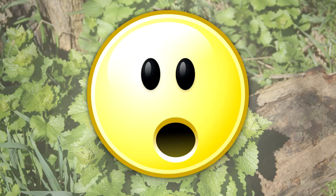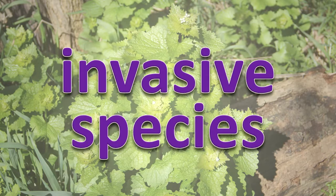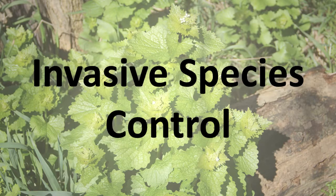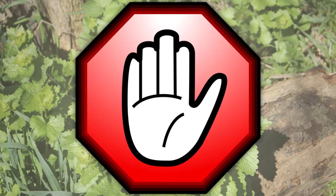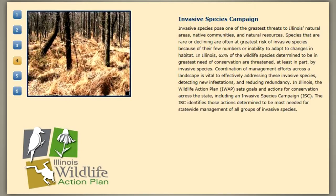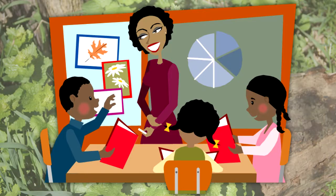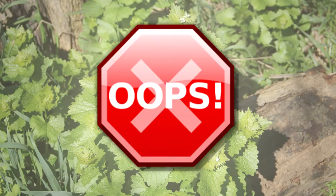Often, when species move to an area where they don't normally live, they can cause many problems. An invasive species is one that is not native to a particular ecosystem, and that does or is likely to cause harm to the environment and or the economy. The most effective means to stop invasive species is to prevent them from being introduced and established. In Illinois, the Wildlife Action Plan sets goals and actions for conservation across the state, including an Invasive Species Campaign that identifies those actions determined to be most needed for statewide management of all groups of invasive species. Prevention includes education and outreach to raise the awareness of the invasive species problem and reduce the chance of unintentional introduction of invasive species.